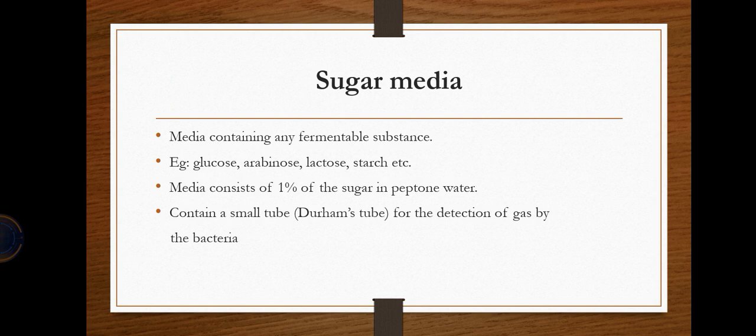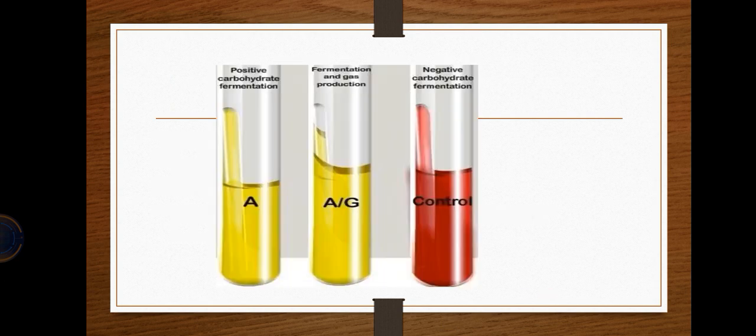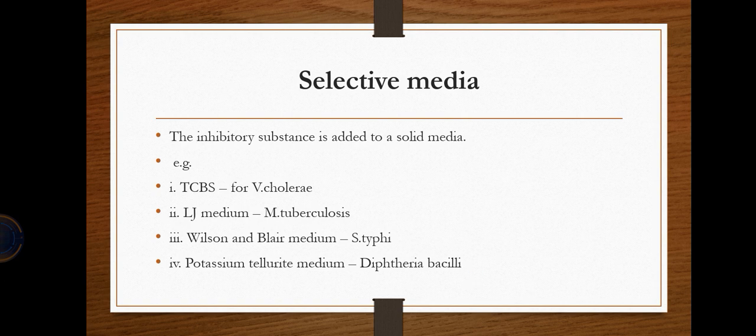Sugar media contain fermentable substances such as glucose, arabinose, lactose, and starch. It consists of one percent sugar in peptone water and contains a small Durham's tube for detection of gas produced by bacteria. In bacteria where carbohydrates are fermented, gas is produced and condensed products form. In carbohydrate-negative bacteria, no fermentation occurs.